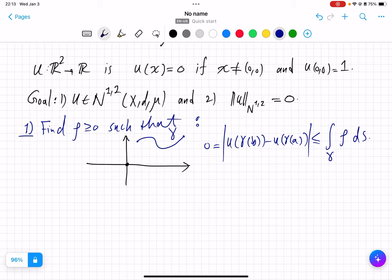So basically, ρ equals zero almost works.